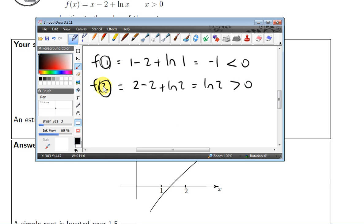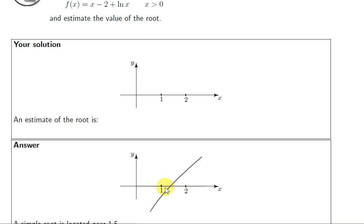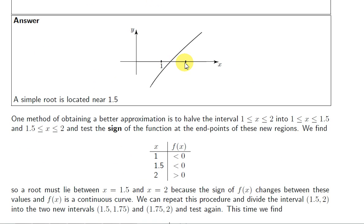If we see a sign change for a function — the function changes from negative to positive or positive to negative over an interval — then the graph must cross that interval at least once. We can keep dividing down this interval. We could examine the function at 1.5, the midpoint. f(1.5) gives a negative value, whereas f(2) is positive, so there must be a root between 1.5 and 2 because the function changes sign.